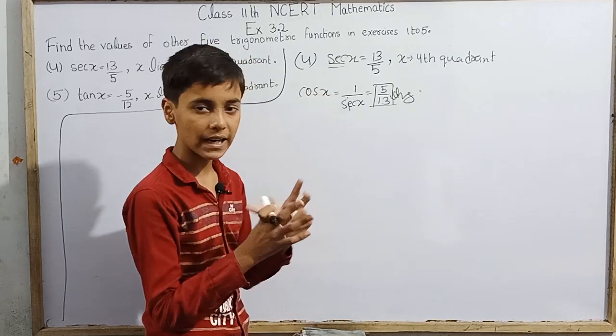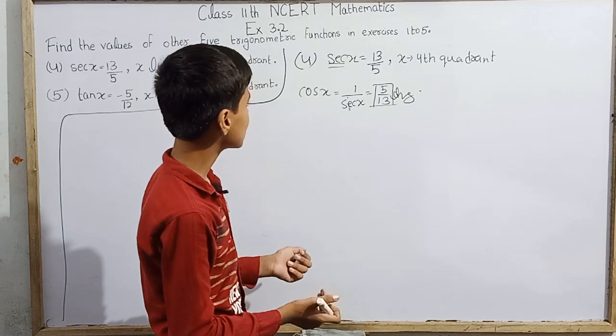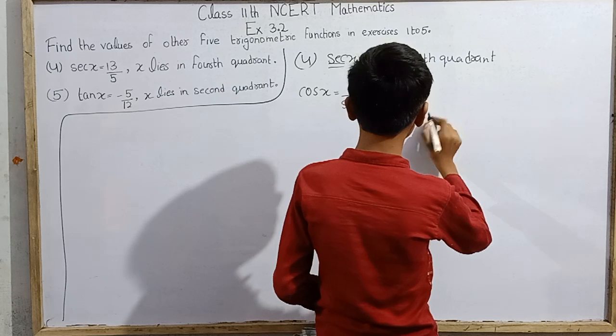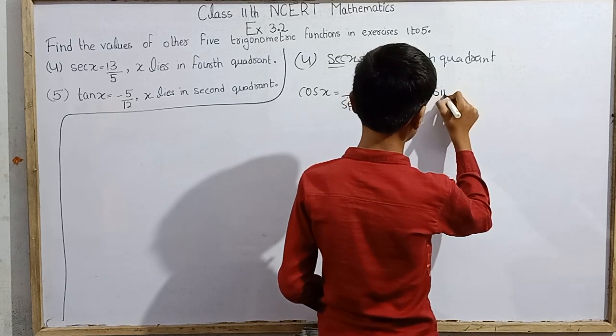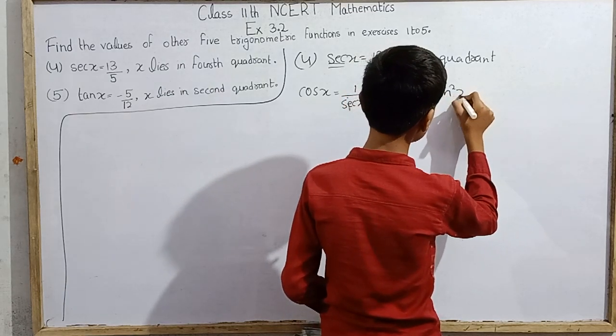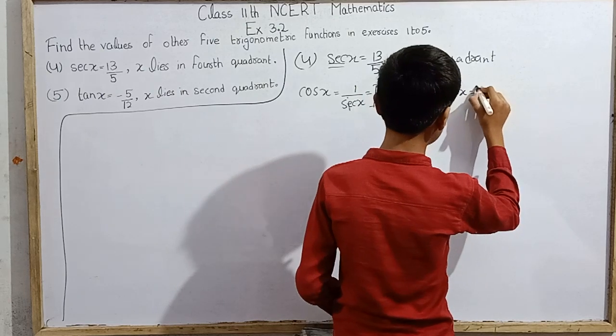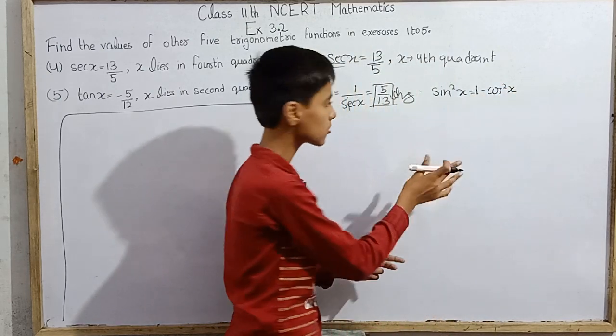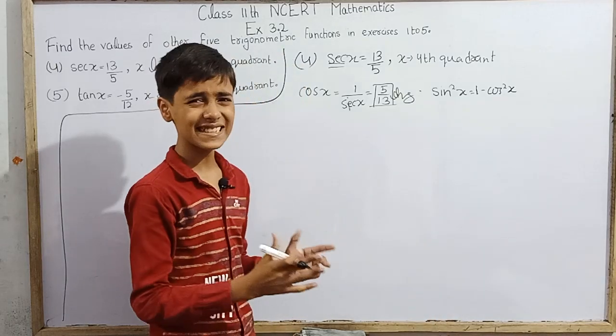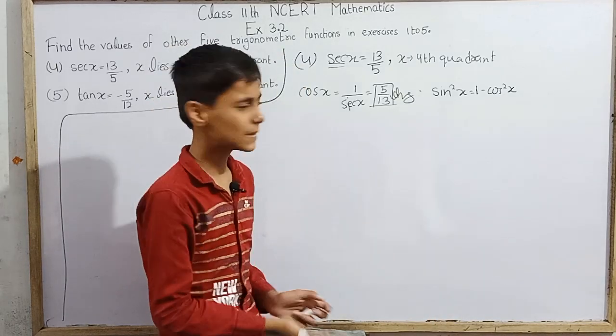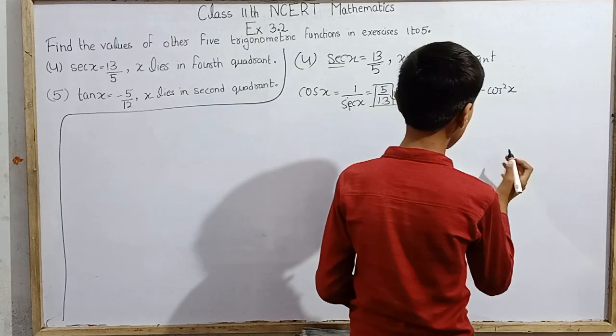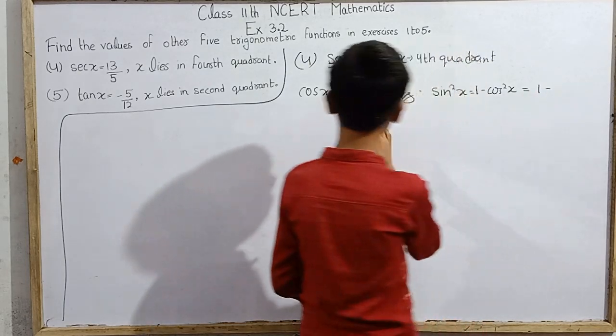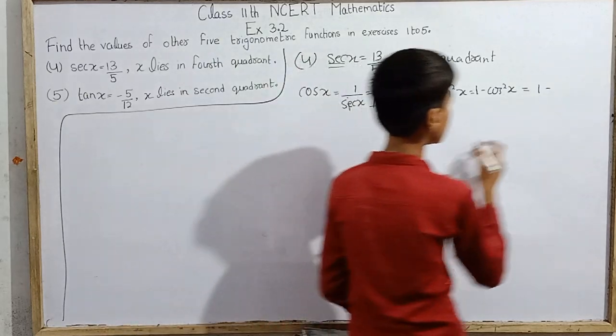Now we can find sin x. We know that sin squared x equals 1 minus cos squared x. If we want, we can also use other identities to directly calculate tan x, but we don't really require that. Let's start with sin x. We have 1 minus cos squared x, which is 1 minus 5 squared over 13 squared.